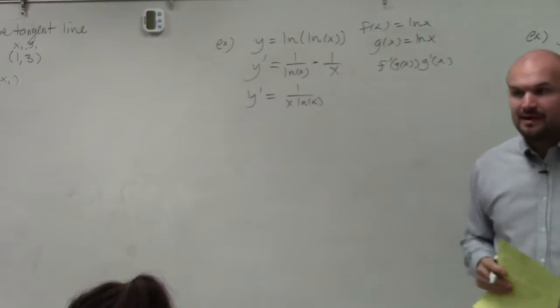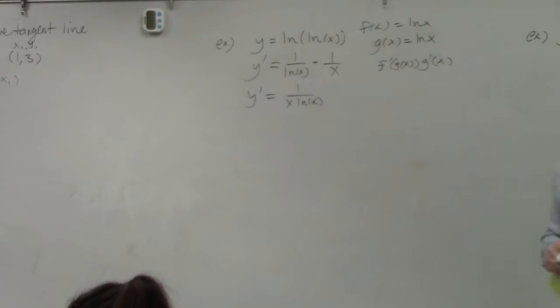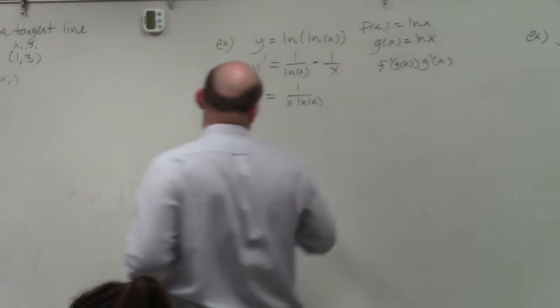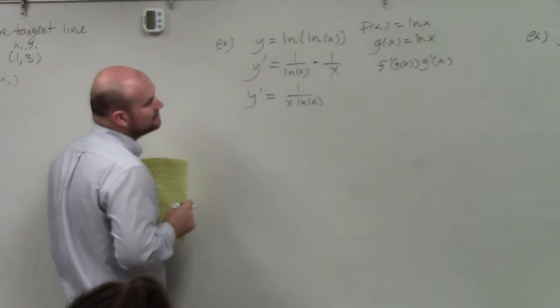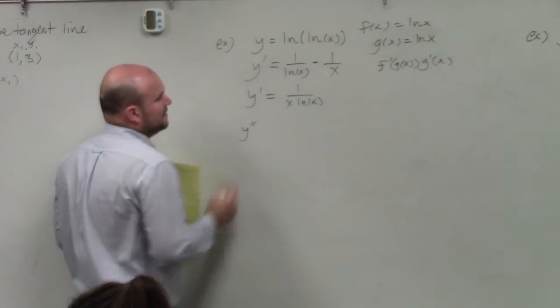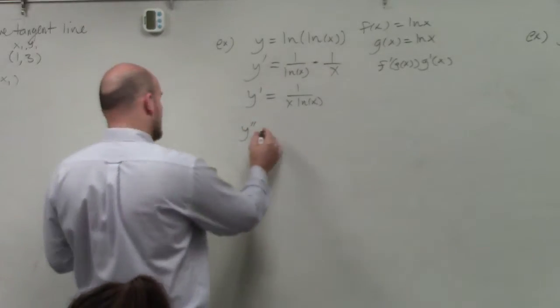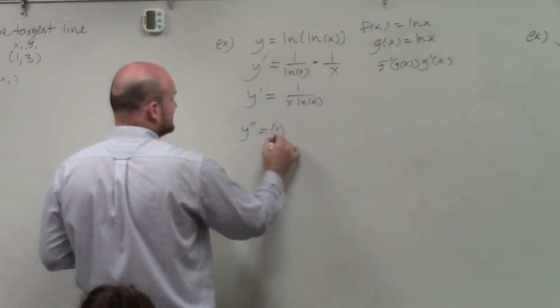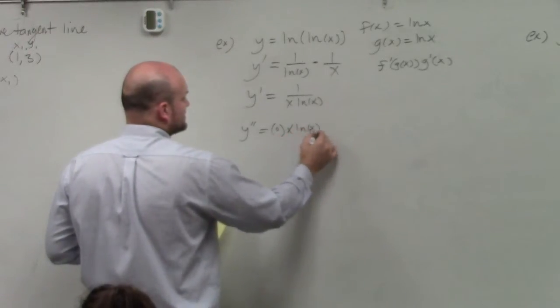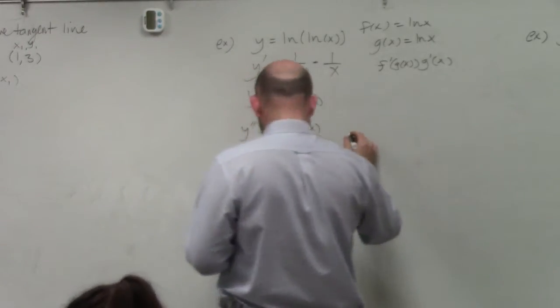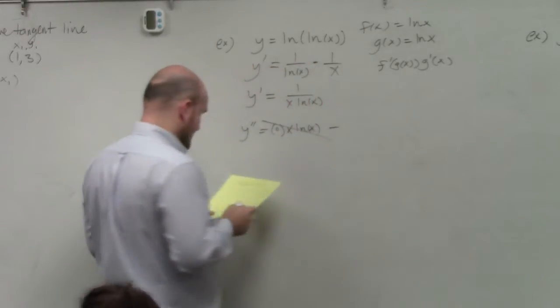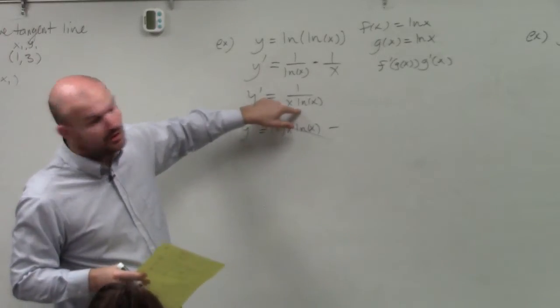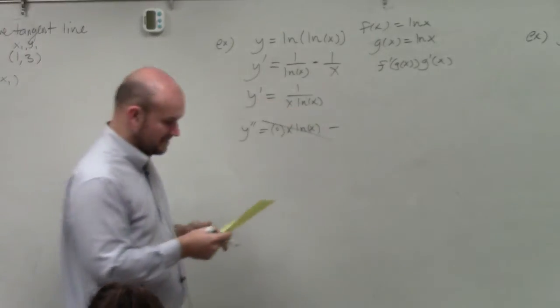So now, once I've found y prime, now all I need to do is go ahead and do this again to find the second derivative. And you could put this as negative exponent, use the product rule, or you could also use the quotient rule. So I'm going to go ahead and apply this. If I'm going to take the derivative, I would have basically derivative of my numerator times x ln of x, which we know is just going to go to 0. And then minus, if I'm going to take the derivative of my denominator, I'd have to use the product rule. So I'm basically using the product rule within the quotient rule.